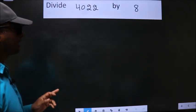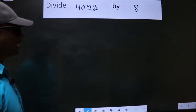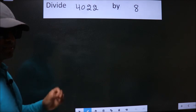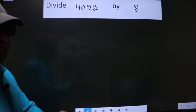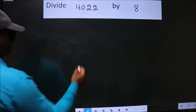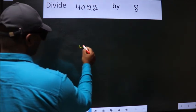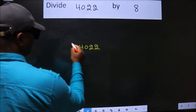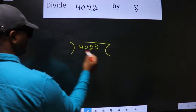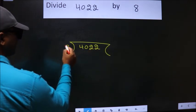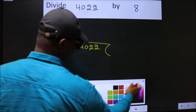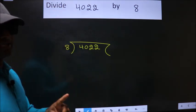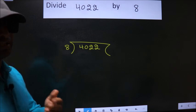Divide 4022 by 8. To do this division, we should frame it in this way. 4022 here, 8 here. This is your step 1.